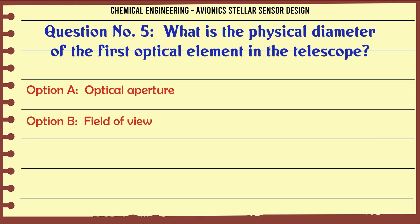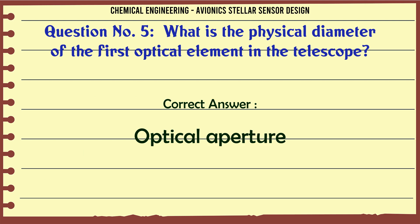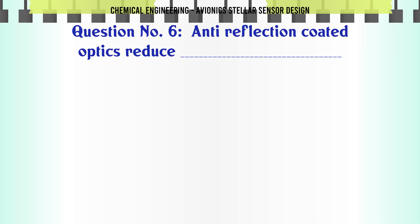What is the physical diameter of the first optical element in the telescope? A. Optical aperture, B. Field of view, C. Effective focal length, D. Light detector. The correct answer is Optical aperture.